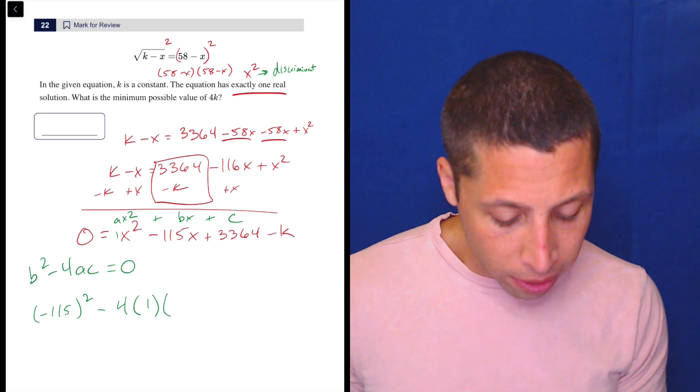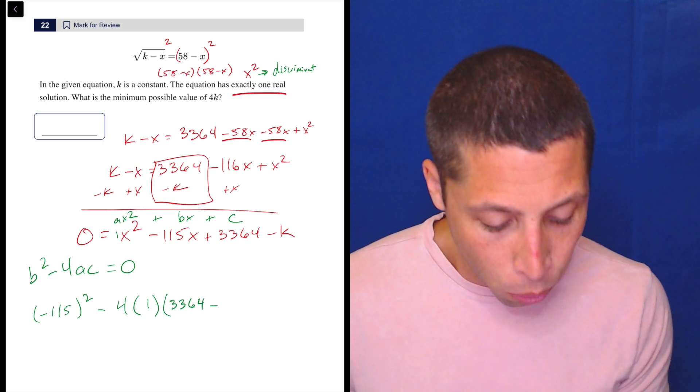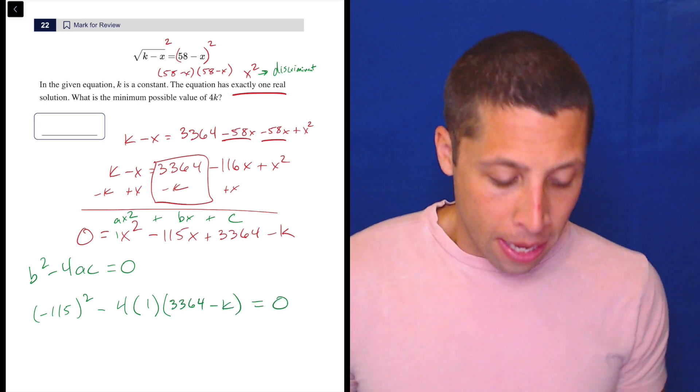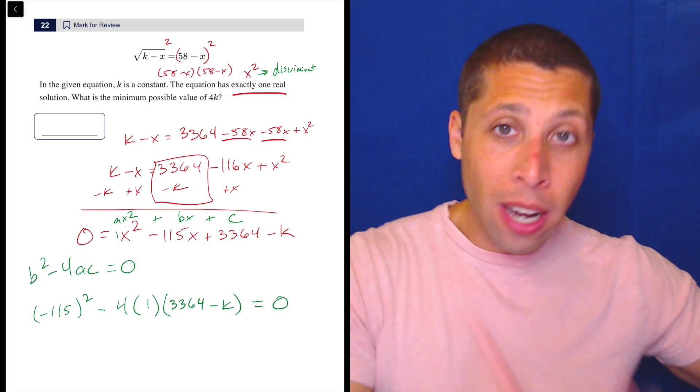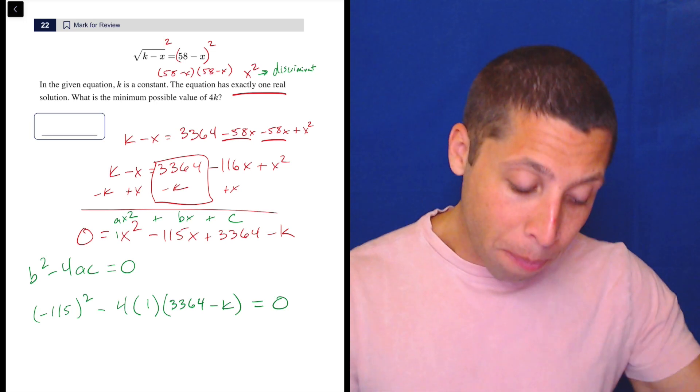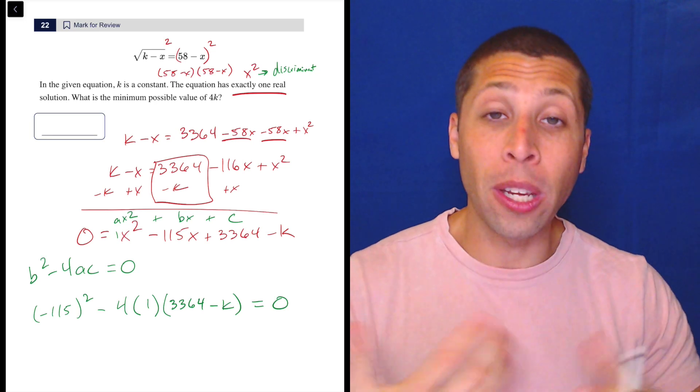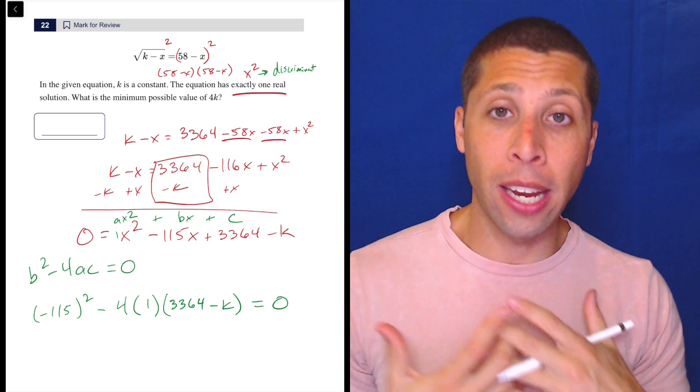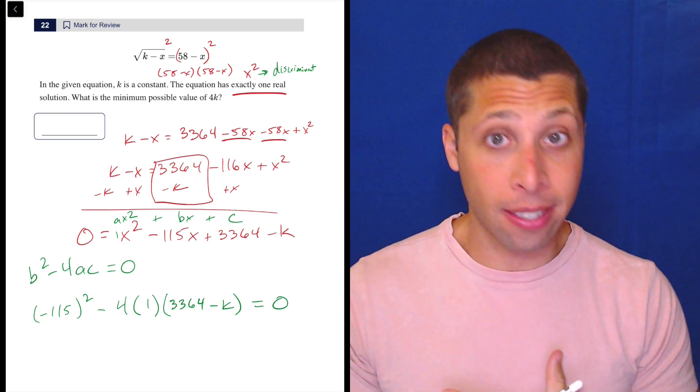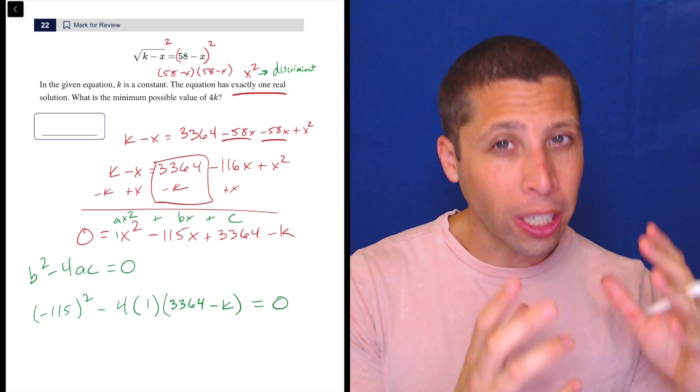That's negative 115 squared minus 4a is 1, right? Because that's what's in front of the x squared. Now, this is where the annoying part is. The c term is actually this whole thing, 3364 minus k. Because if the k were a number, which it is, it's just we don't know it yet, then we would combine it with 3364 to get what we call the c term, the part of a quadratic equation that does not have any x's attached.